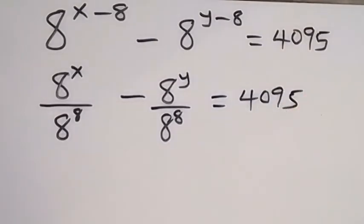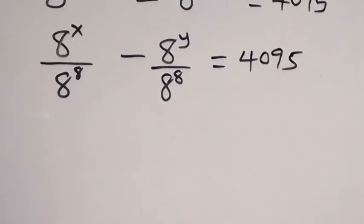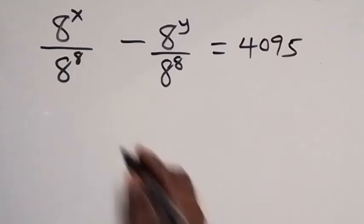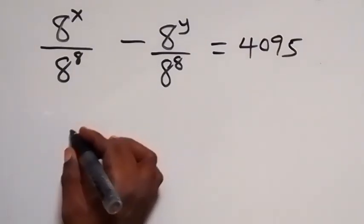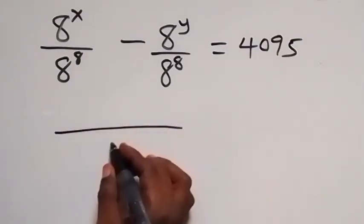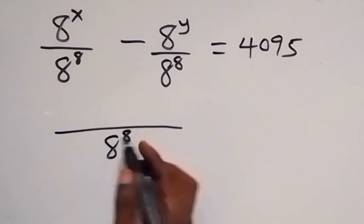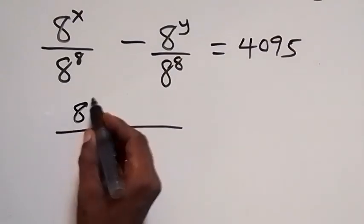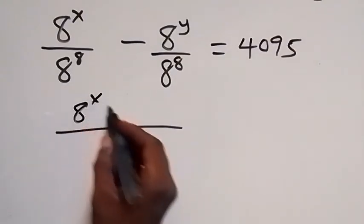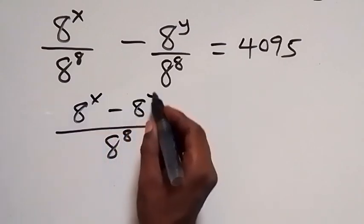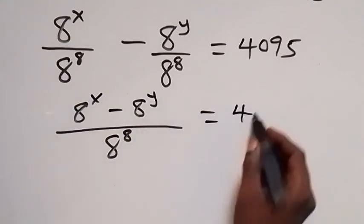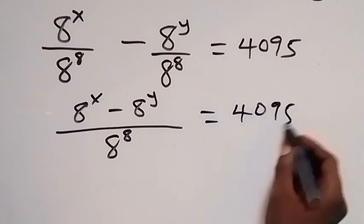This follows from the law of indices. In the next step, we can find the LCM here. So when we take the LCM on this side, this gives us 8 raised to power 8, and we still have 8 raised to power x minus 8 raised to power y, which is equal to 4095.